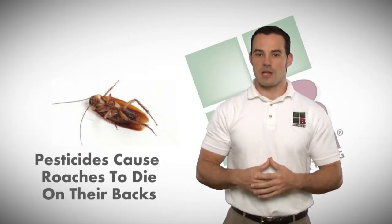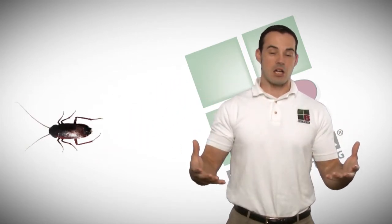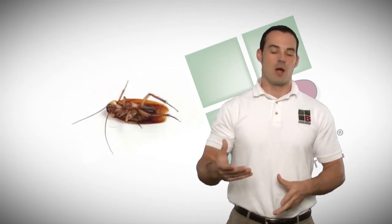Generally when you find a roach lying on its back, it's because it's been treated by the chemicals used by your pest control company. Those products are actually neurotoxins, or they affect the nervous system of the insect, which in dying causes them to flop around and end up on their back.